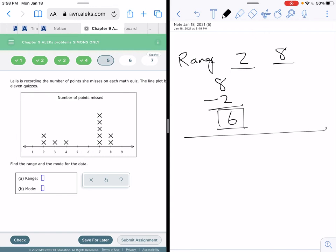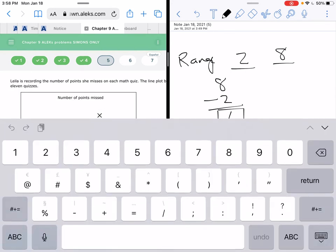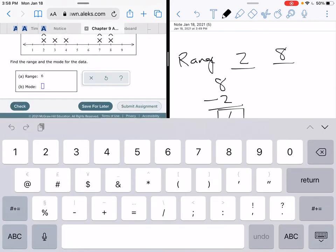And then when you talk about mode, remember mode means most. So which number shows up the most? You look at your line plot and you can clearly see that the stack is the highest at 7. So 7 is the one that shows up the most. So my range is 6 and my mode is 7.